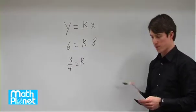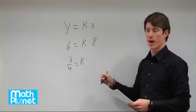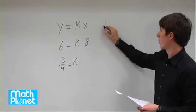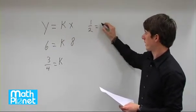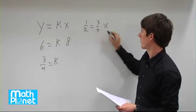Now the question is what is the value of x when y is equal to 1 half? So now we just say y is 1 half, we know that k is 3 fourths, and we want to solve for x.